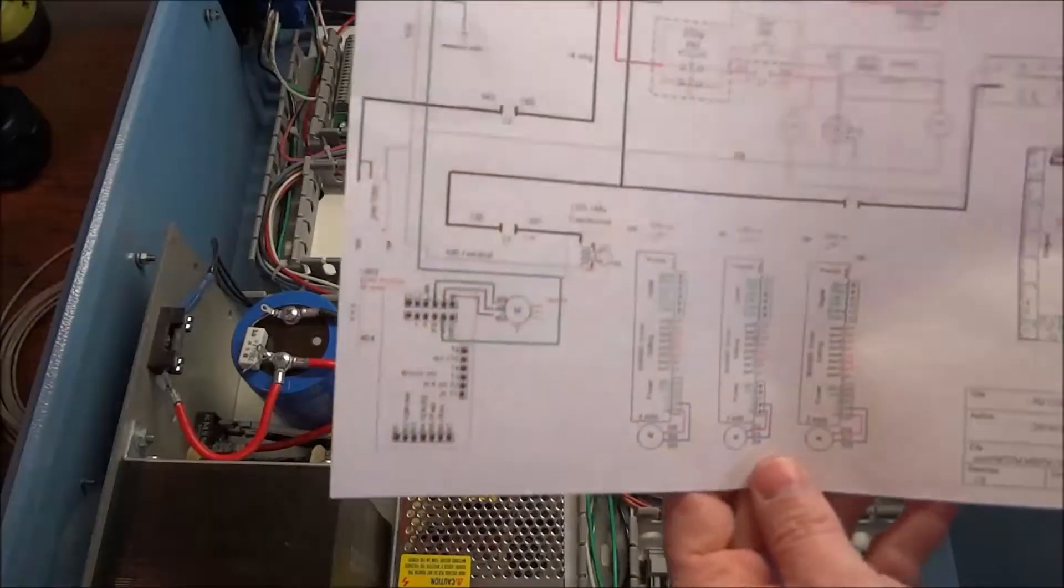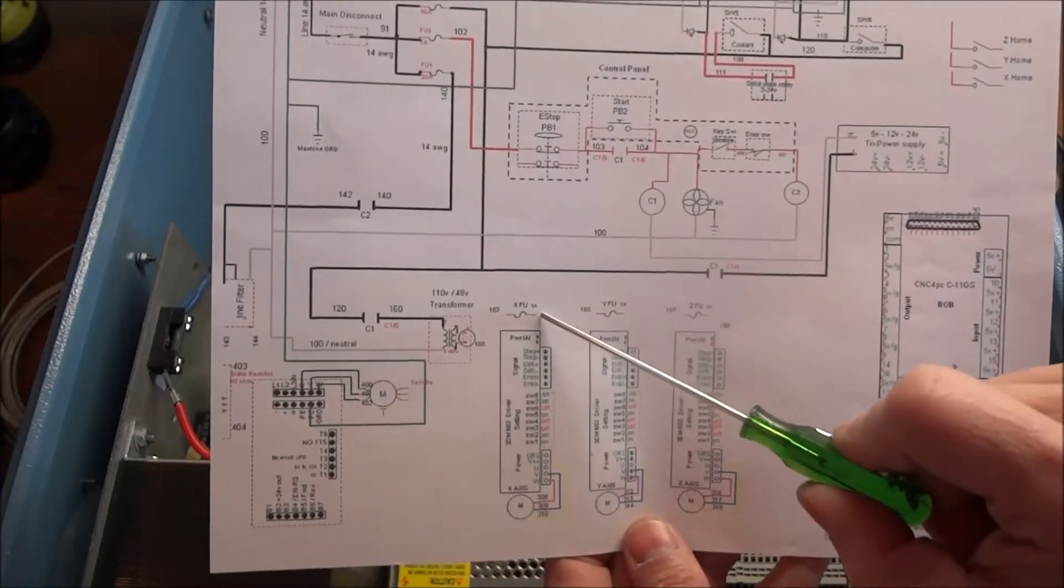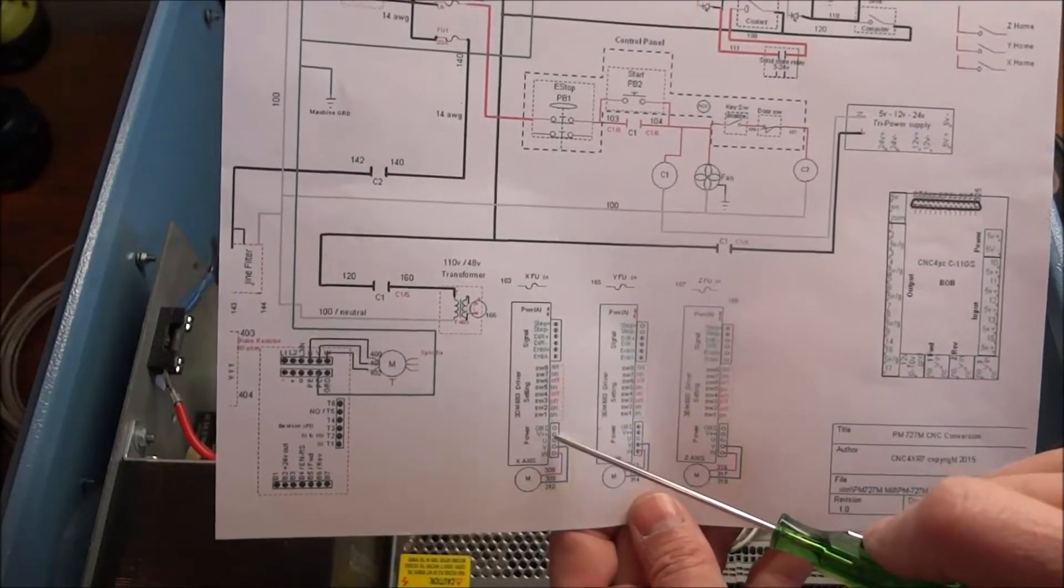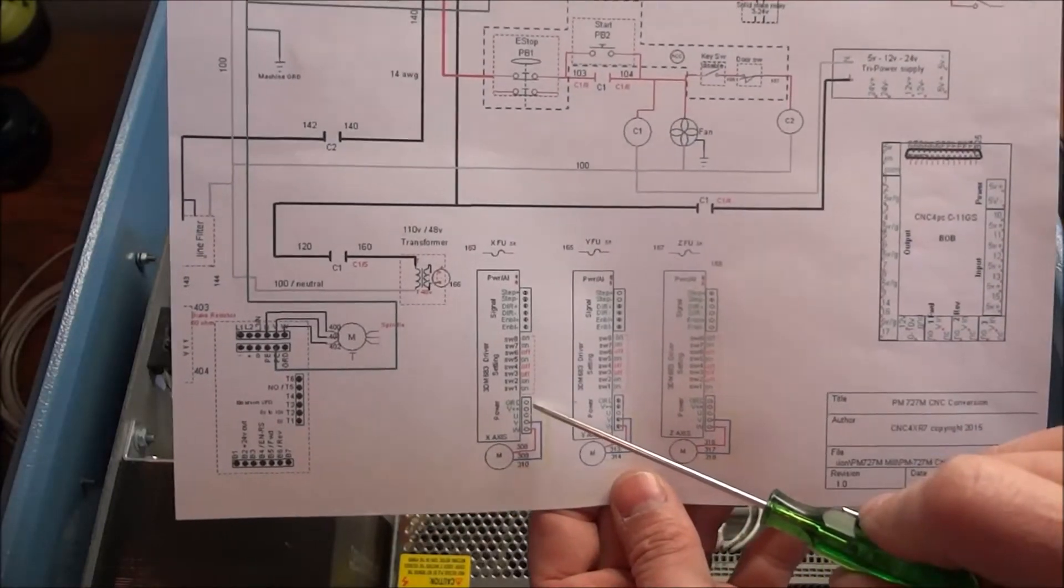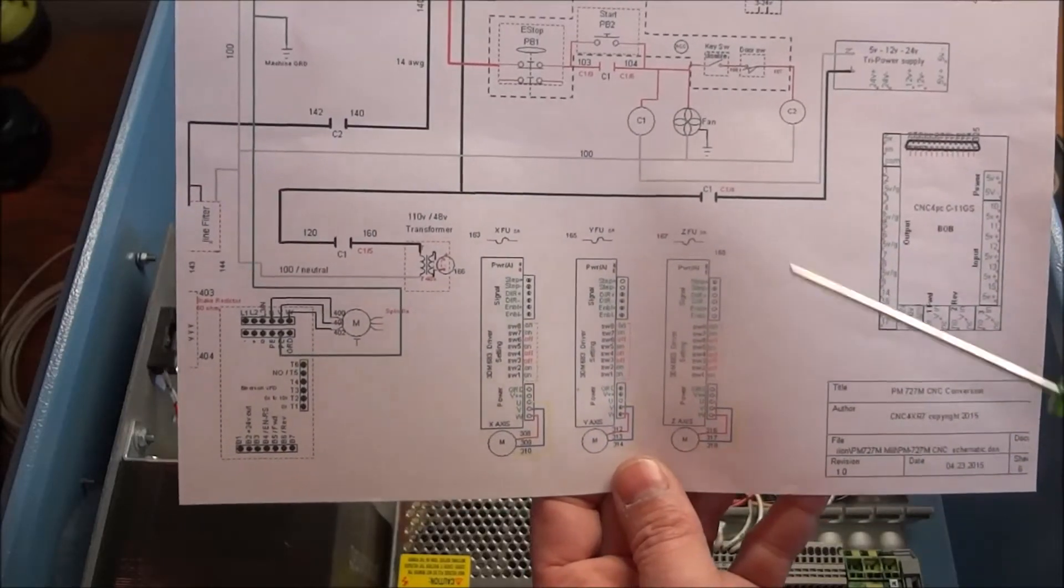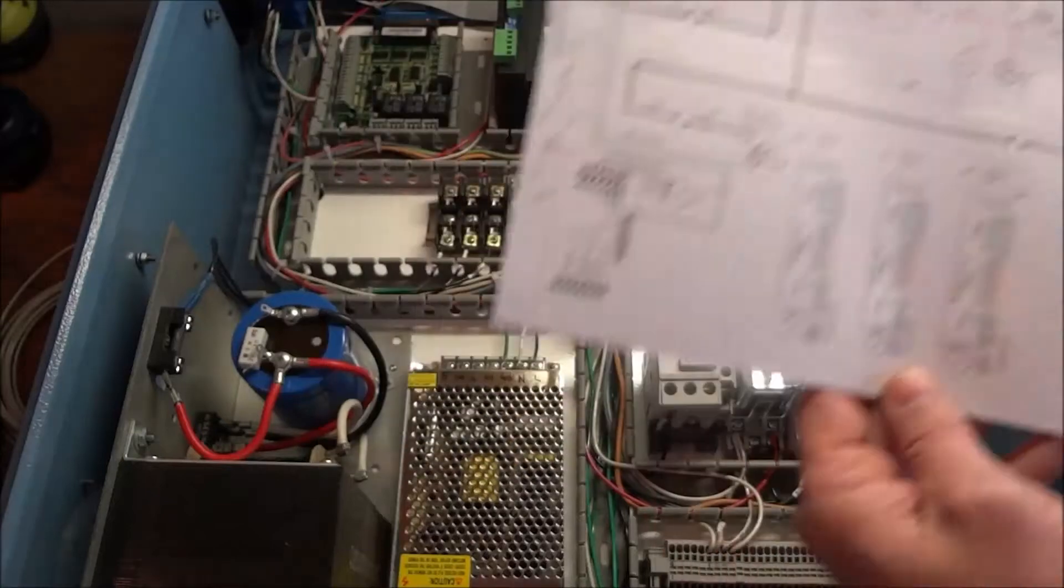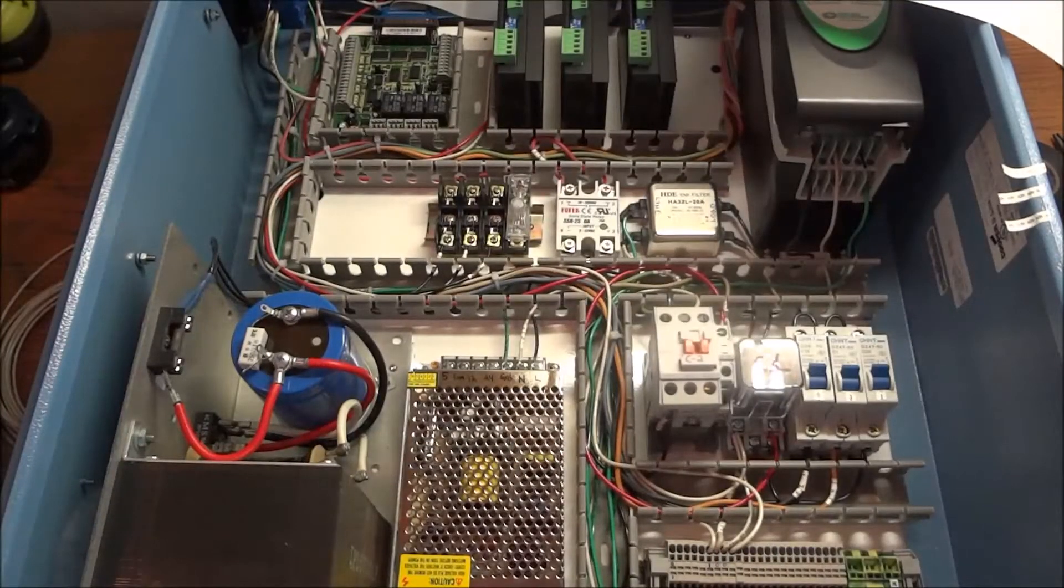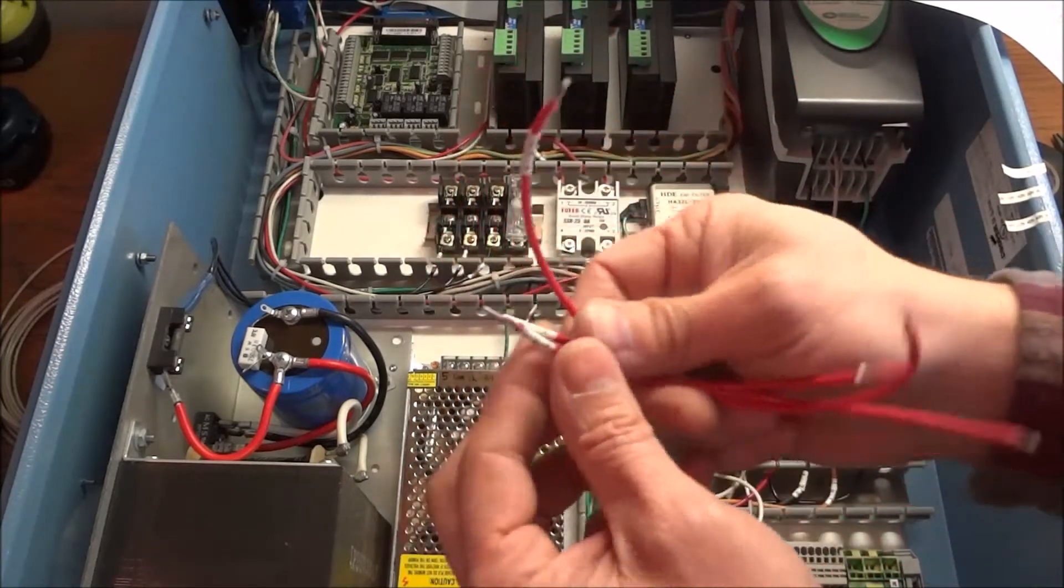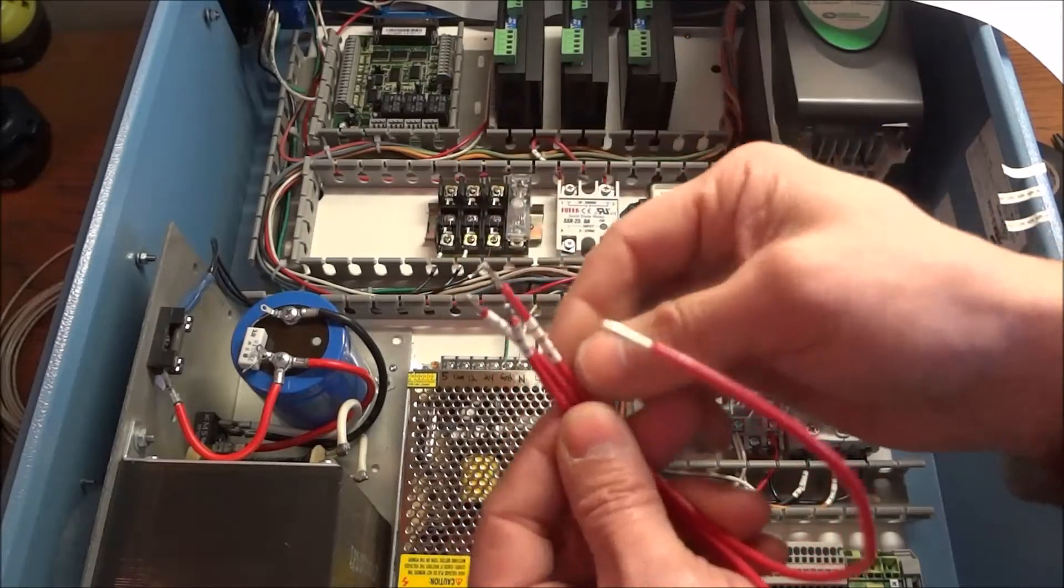So now that we have power going to our fuses from our 48 volt power supply, now we need to run from the other side of our fuse down to our power connection on our stepper drivers from each fuse. So what I did was I went ahead and made up some wires. This is again 16 gauge. This was stranded so I went ahead and tinned the ends.